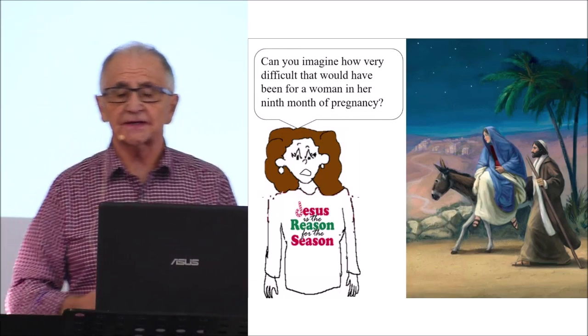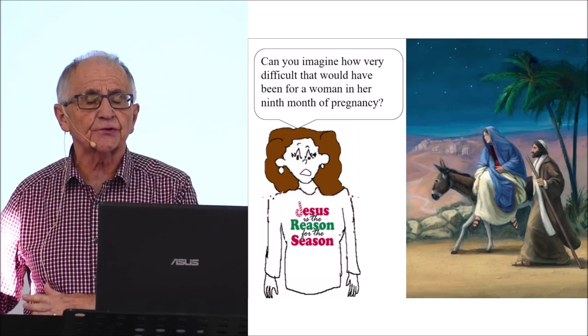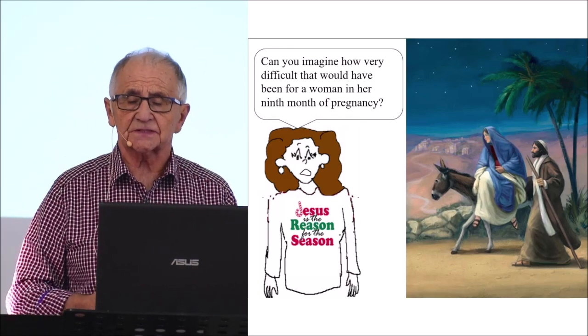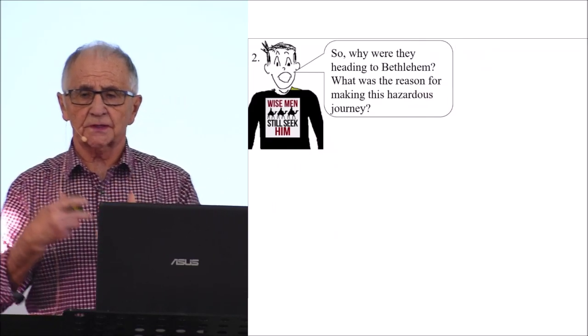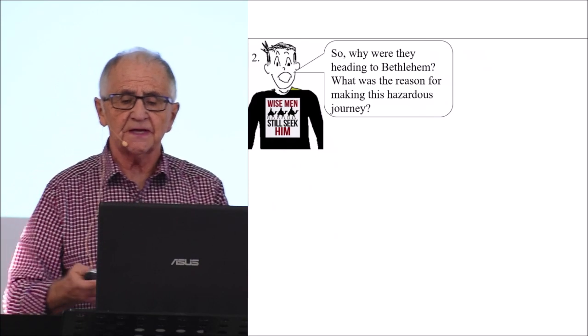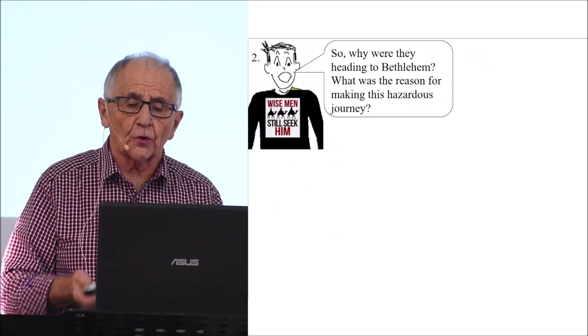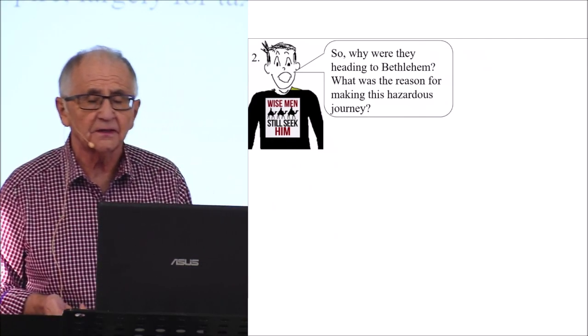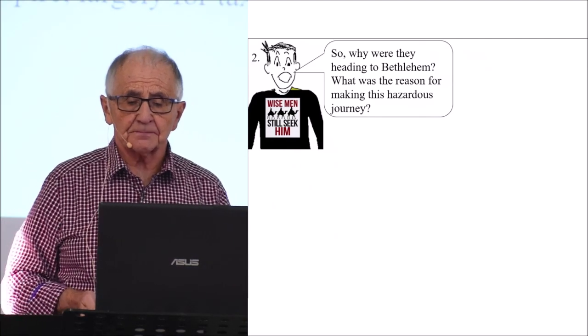And the answer is that it all happened because of a decree by the Roman emperor at the time, Caesar Augustus. Now, the Romans were in control of Israel during this period of time in history. And Augustus had ordered a census be taken throughout the entire Roman Empire. And this was largely for taxation purposes.